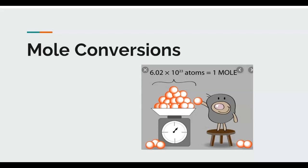Looking at your periodic table, one mole of carbon — that means 6.02 times 10 to the 23rd atoms of carbon — if we put those on a scale, they're going to have a mass of 12.01 grams. Since chemistry is written in the language of moles, we need to convert moles into grams when we work in the lab, because we can measure grams easily and then translate into moles.